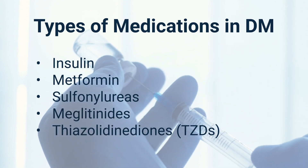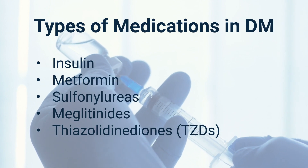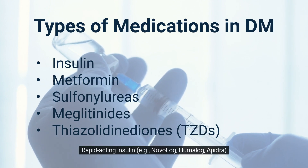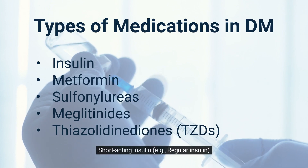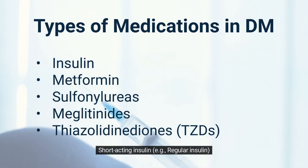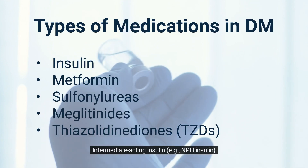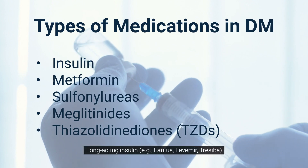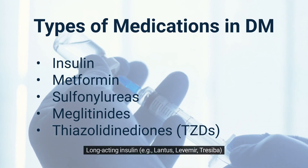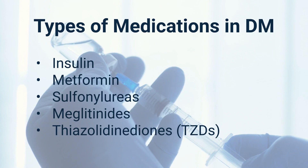Insulin types and examples: Rapid-acting insulin — Novolog, Humalog, Apidra. Short-acting insulin — Regular insulin. Intermediate-acting insulin — NPH insulin. Long-acting insulin — Lantus, Levemir, Tresiba.